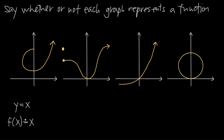A function is an equation such that there's only one output value of y for every input value of x, which basically just means if we were to graph the function and we choose any value of x, it's only possible to get back one unique result for y.